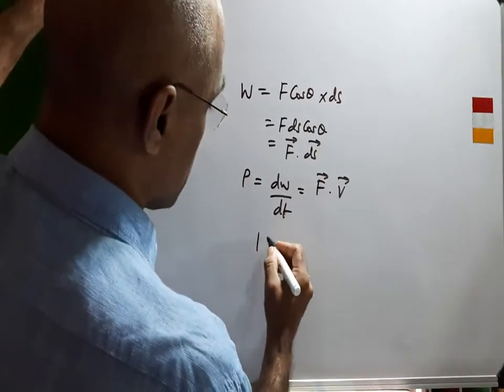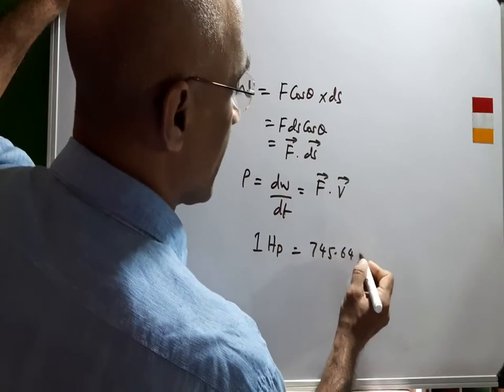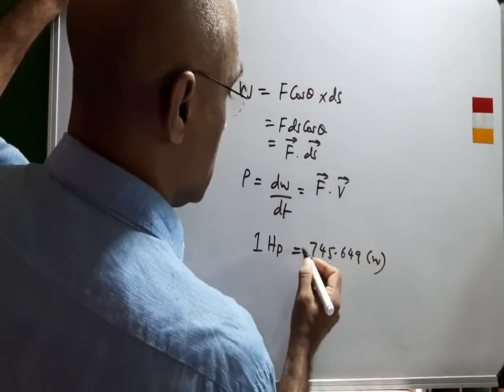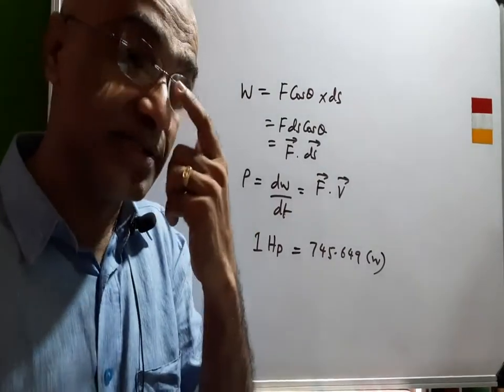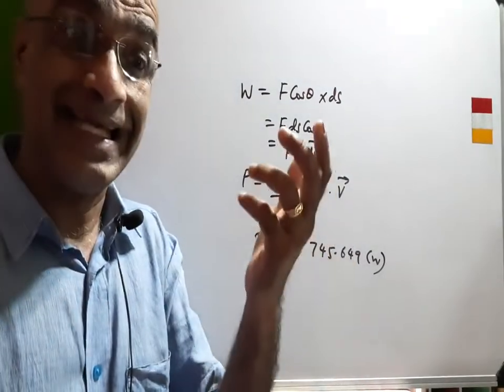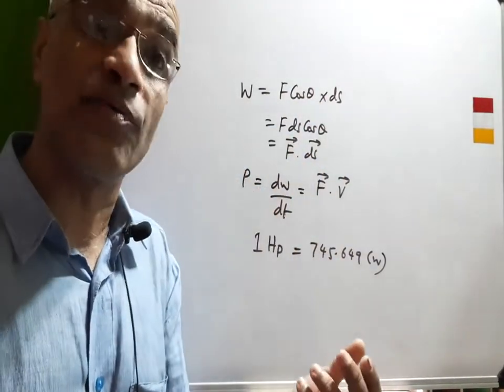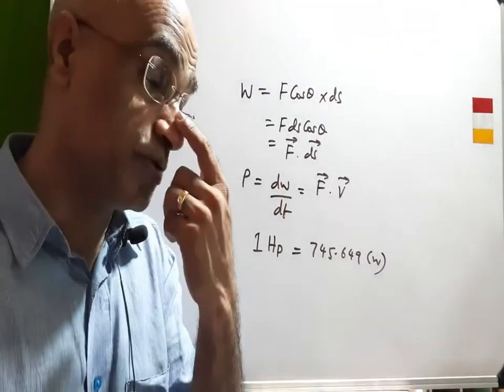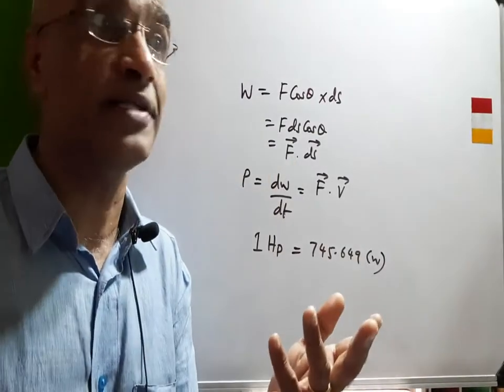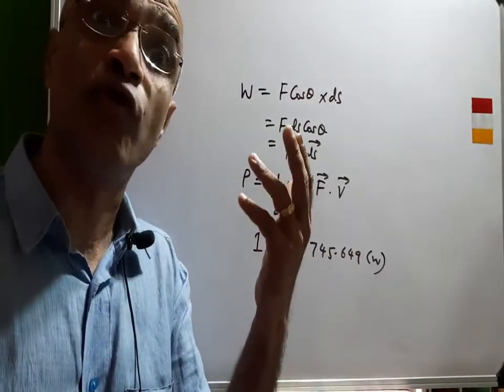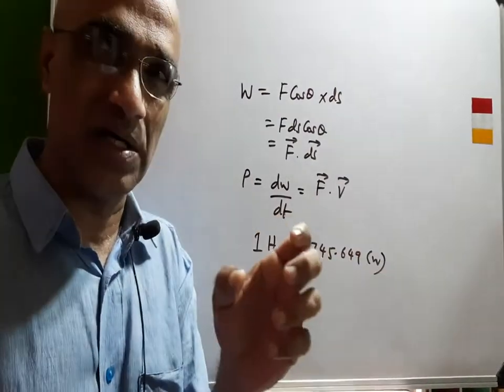To be more precise, one horsepower is equal to 745.649 watts. Now the horsepower which I'm going to talk to you about - the common locomotive engines, the WDM-2, the WDG-3A, the WDG-4G, the latest American version which the local pilot is talking to me about is having a horsepower of 4,000 horsepower, and such engines are capable of pulling loads even up to 4,000 tons.